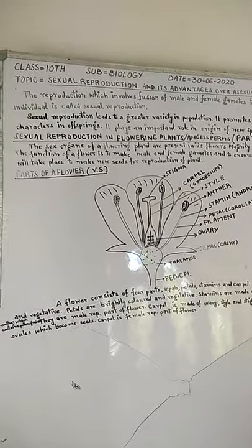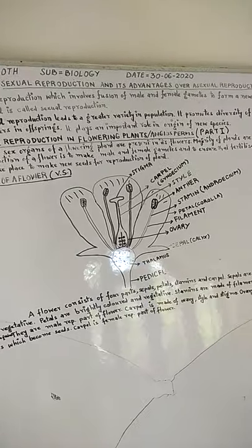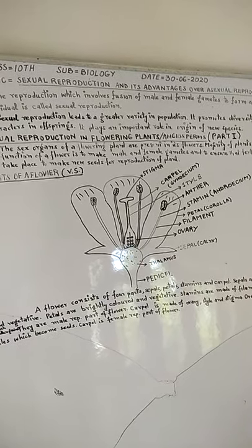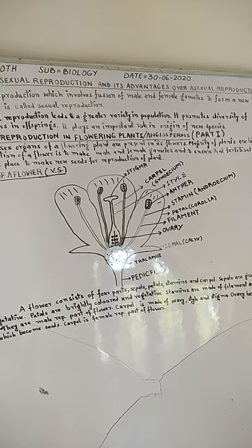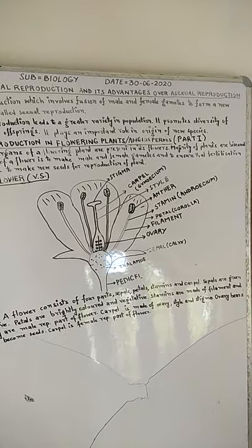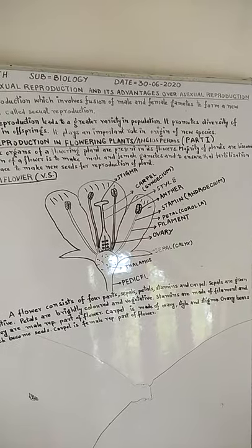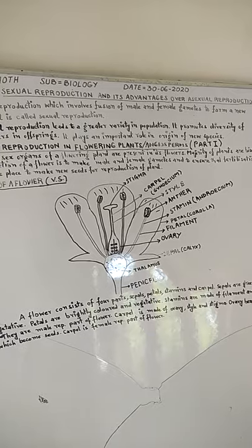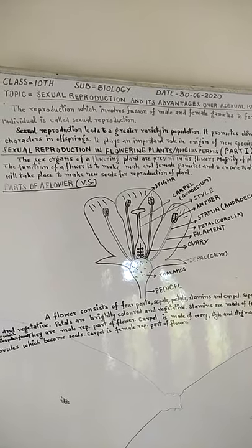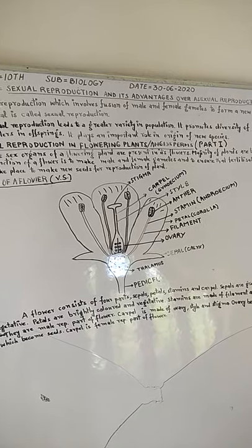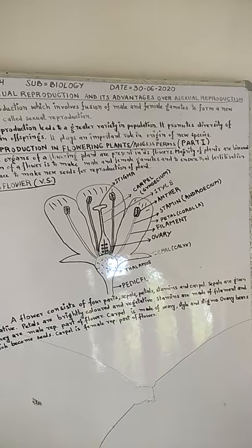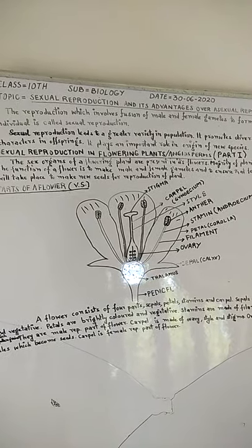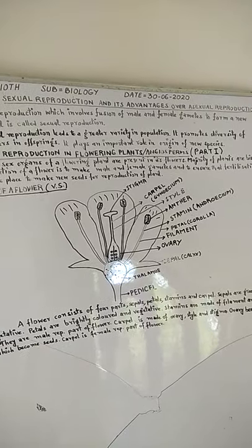Then we come to sexual reproduction in flowering plants or angiosperms. The sex organs of a flowering plant are present in its flowers. The majority of plants are bisexual, that is they bear both sexes, male and female, on them. The function of a flower is to make male and female gametes and to ensure that fertilization will take place to make new seeds for reproduction of a plant.